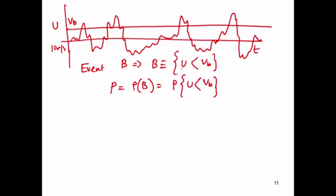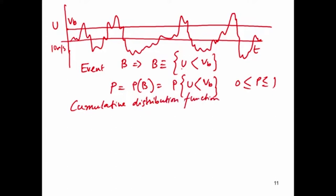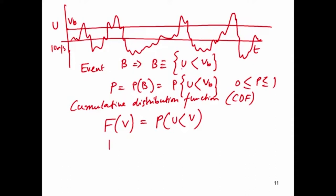U happens in the actual physical space in time, while V happens in the probability space. The probability will be less than or equal to 1. We can define a quantity called the cumulative distribution function, or CDF, defined as capital F(V) equals the probability of U less than V. So the probability of event B is essentially the CDF F evaluated at VB.